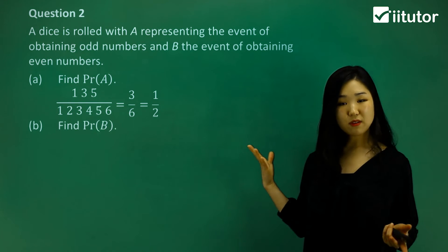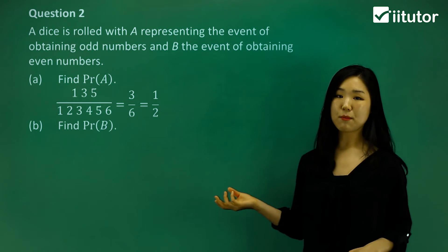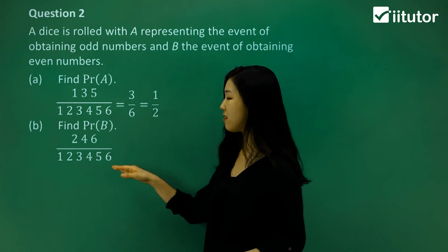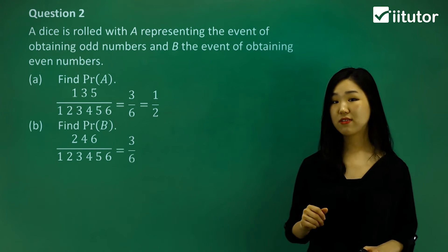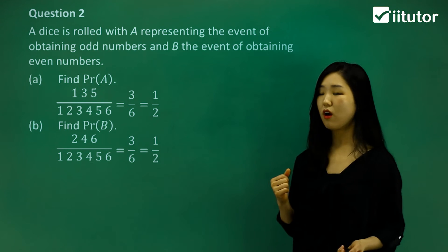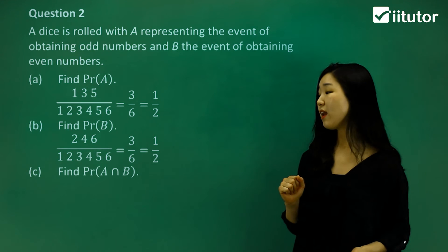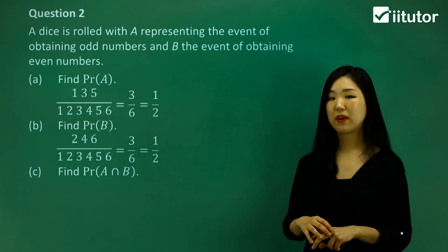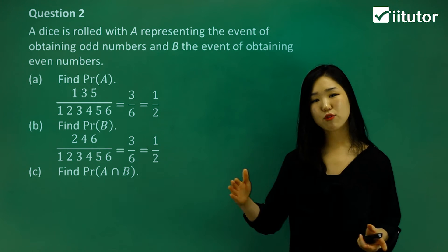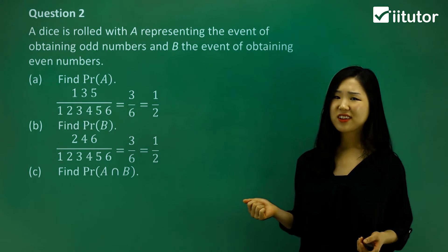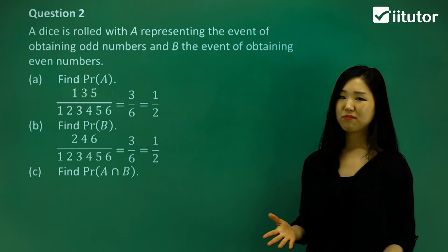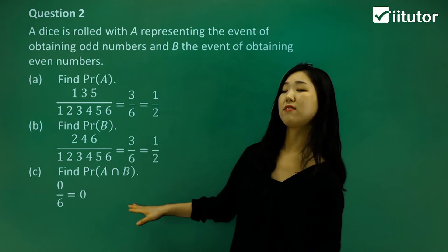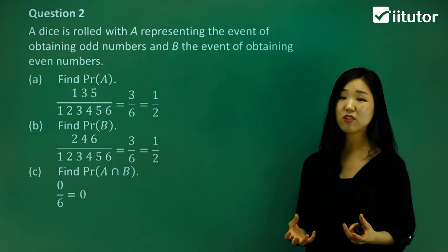Now find the probability of event B — obtaining even numbers. The even numbers in a die are two, four, and six — three even numbers out of six total — so the probability is also one half. Now for part C, find the probability of A and B — the common part. In a die, which numbers are both odd and even? Definitely none — a number cannot be both odd and even simultaneously. So none of the six numbers satisfy both, giving us zero over six, which equals zero.